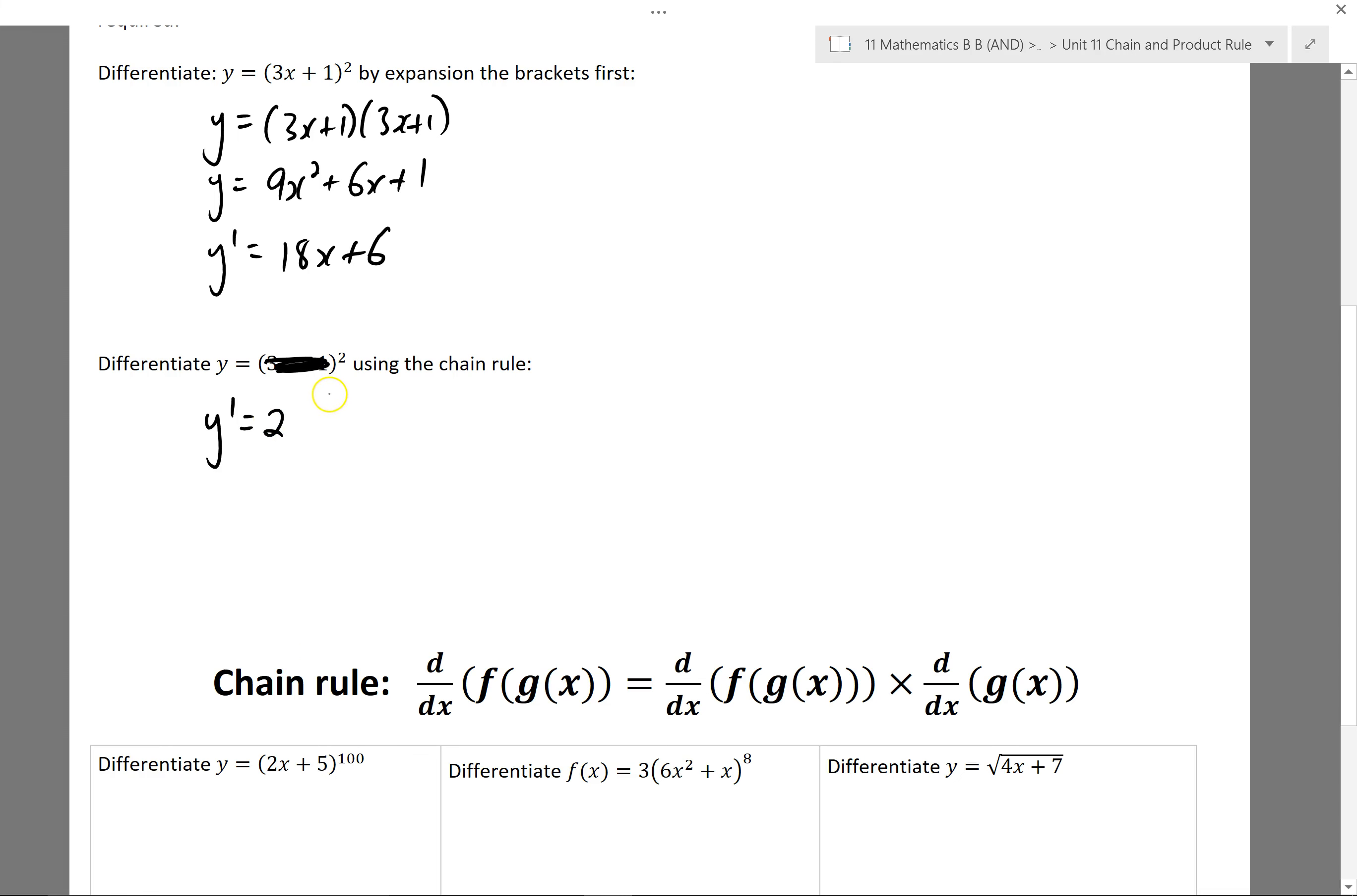So I'd multiply by 2 and then reduce the power by 1. So instead of the power 2, it's the power 1. Now I'm going to rewrite what was inside the brackets and multiply by the derivative of what was inside those brackets.